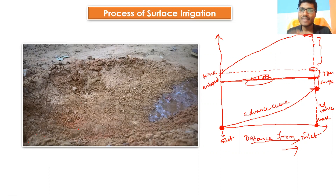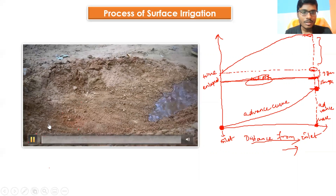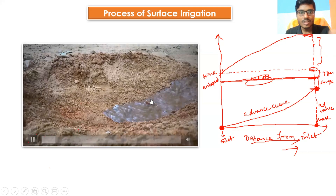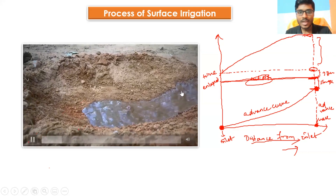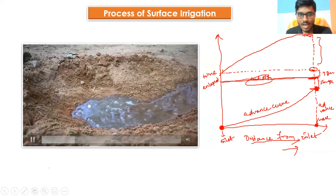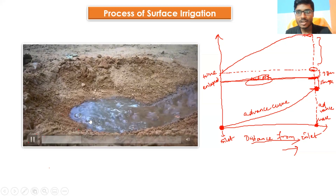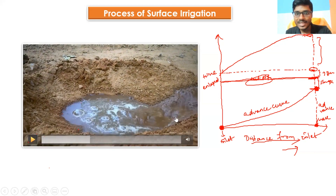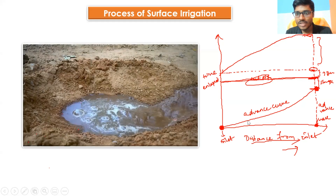Now we'll try to understand and visualize various phases of surface irrigation through a practical video example. When we start supplying water on the soil surface, water approaches and moves on the soil surface — this is known as the advance phase. Water is moving on the soil surface towards the end of the surface. This is the advance stage. We can see this represented as the advance curve on the graph.